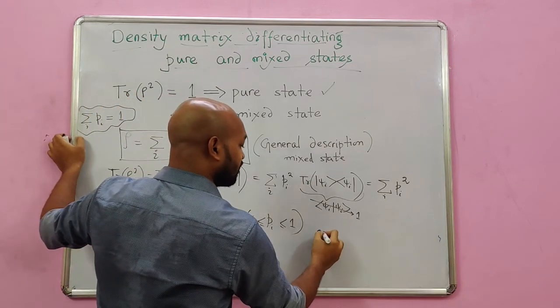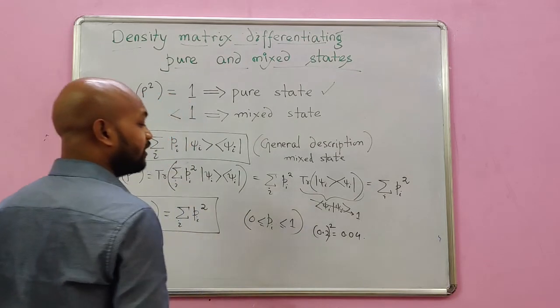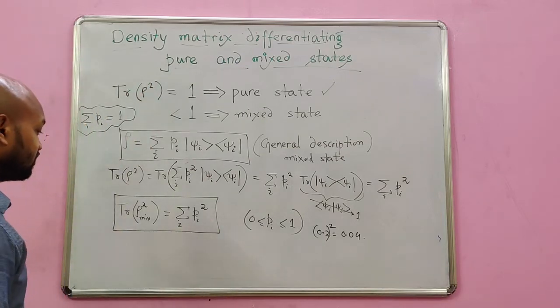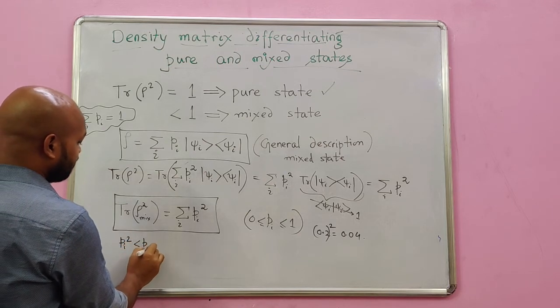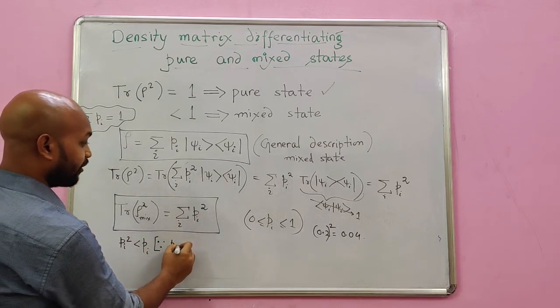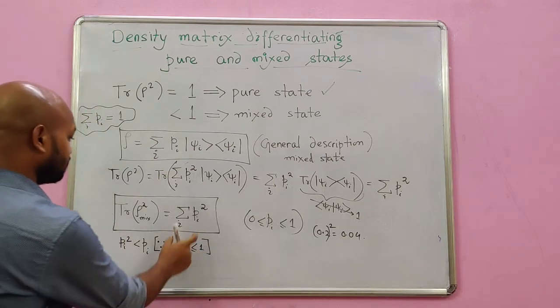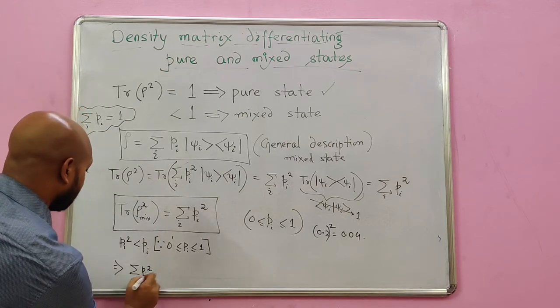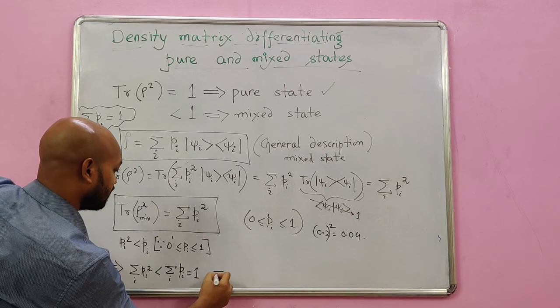What happens if I take the square of 0.2? 0.2 is the number that lies between 0 and 1, it becomes 0.04. Likewise, you can see for all the numbers ranging between 0 and 1, their square is smaller than the number itself. So this is the reason pi squared is smaller than pi. Since pi is a number ranging between 1 and 0, and this is the reason the summation of them, that means the summation of pi squared over i, would be less than the summation of pi. And this summation of pi is equal to 1.